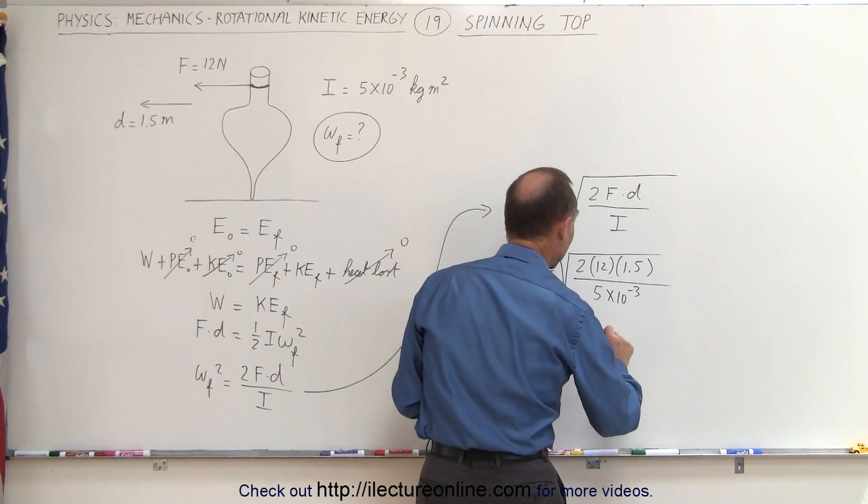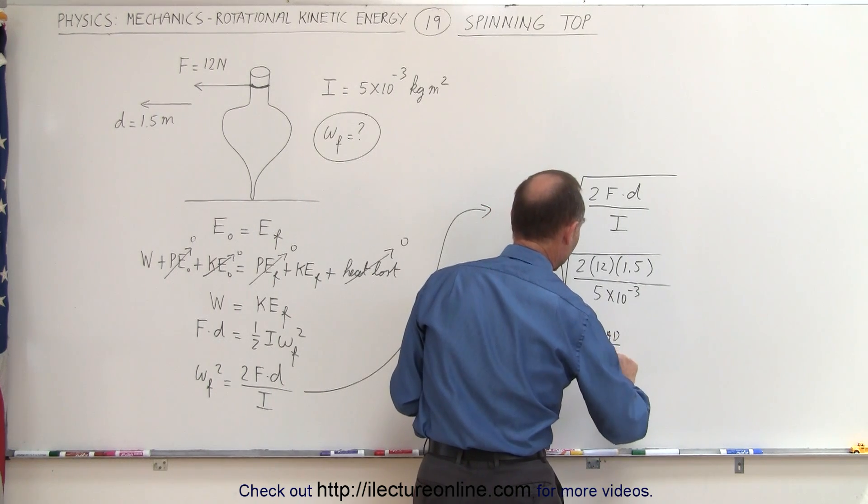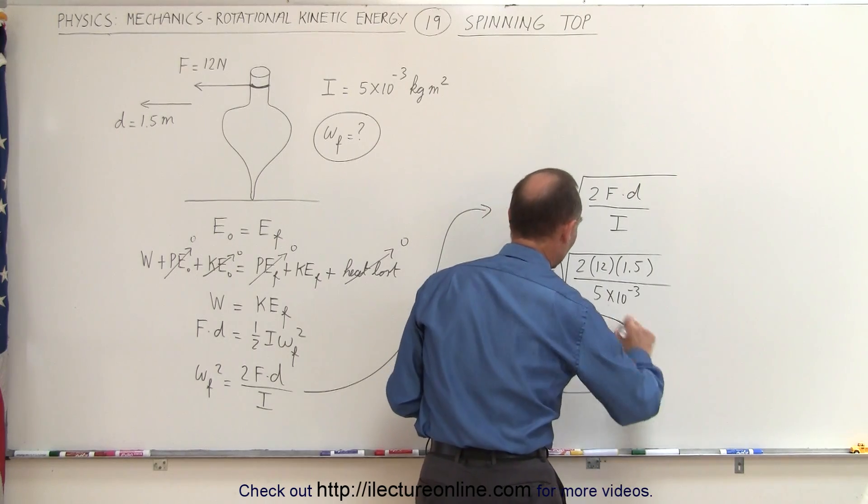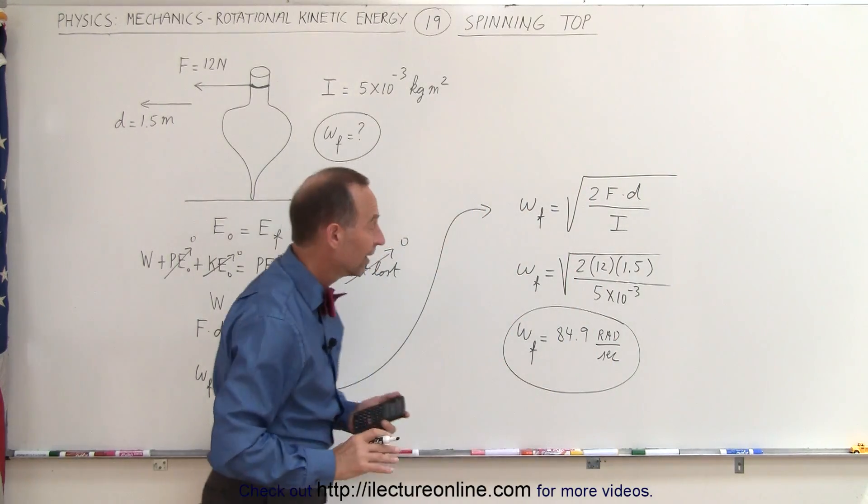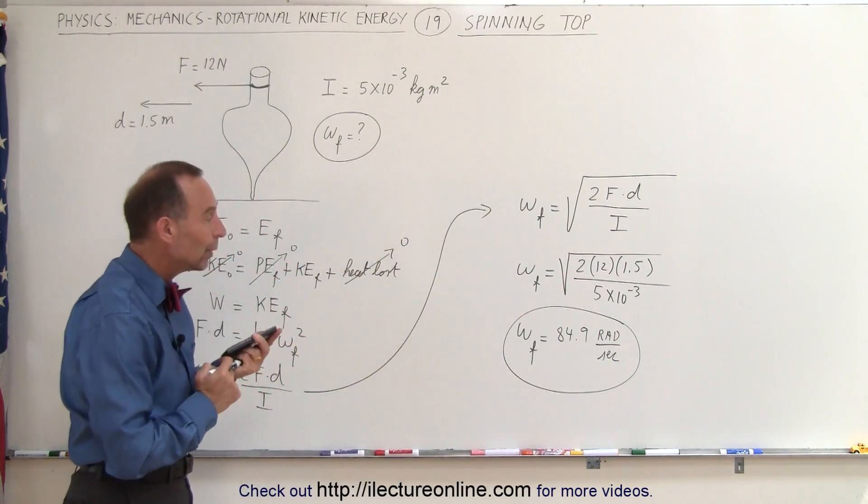And of course that will be radians per second. So in essence this is called the angular velocity, 84.9 radians per second.